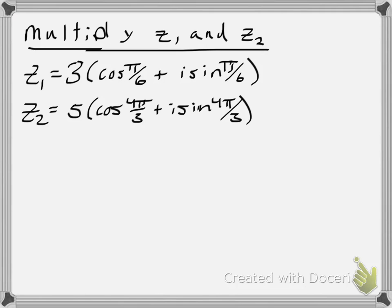I'm going to apply that to my values here. So first of all, my r times s, my 3 and 5 is going to be 15. Next, I need to add the two angles that I'm given. So I need to add pi over 6 and 4 pi over 3.